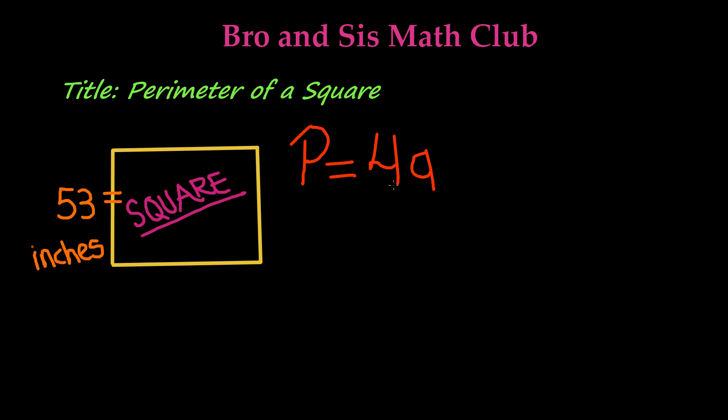We're going to multiply it by four since a square has four sides. So P equals 4a. In this case, our measurement of one side is 53 inches, so we're going to multiply 53 by 4 to find the perimeter of this square.